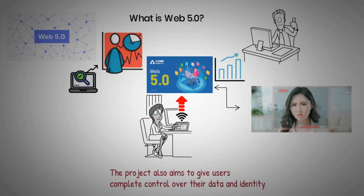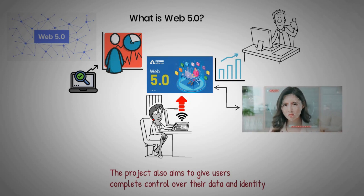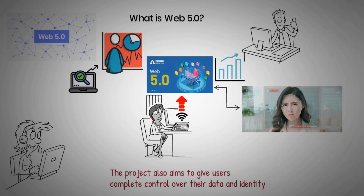One example of a website that can be made available using Web 5.0 maps a person's emotions. Wearing headphones allows users to interact with the content on a website, which will interact with the user's emotions via facial recognition, seeing identifiable changes in a person's face.